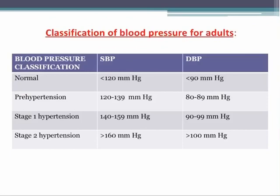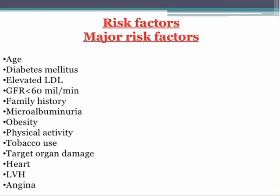In stage 2 hypertension, systolic blood pressure should be greater than 160 and diastolic greater than 100. The major risk factors associated with hypertension include age, diabetes status, elevated low-density lipoprotein, and low glomerular filtration rate — which should be less than 60 milliliters per minute. Family history is also a major risk factor, as is microalbuminuria.